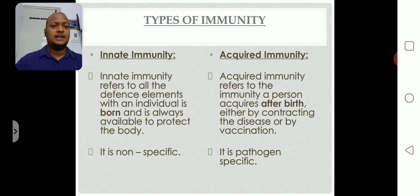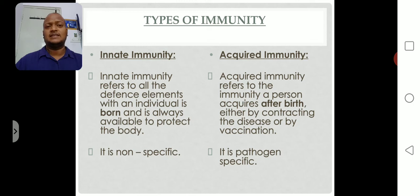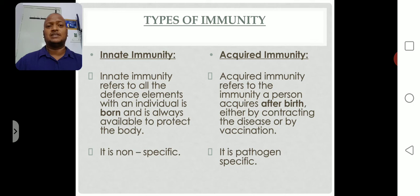Acquired immunity develops in the human body by contracting a disease — any type of pathogen or antigen enters the body and causes disease. The next time the same antigen enters, our immune system responds fast because it has already encountered it before and memorized the structure and information of that particular antigen.